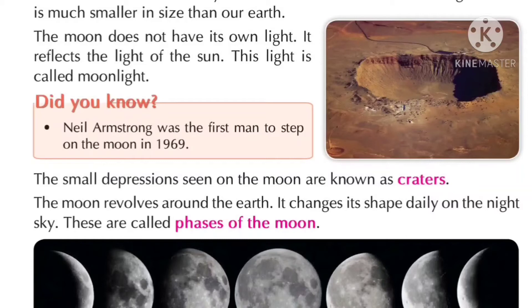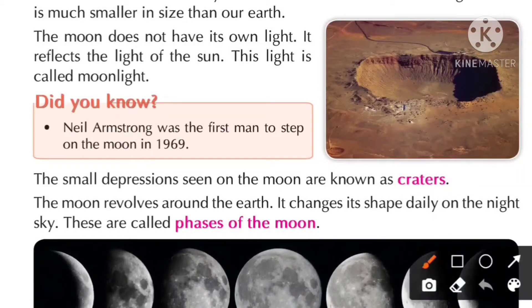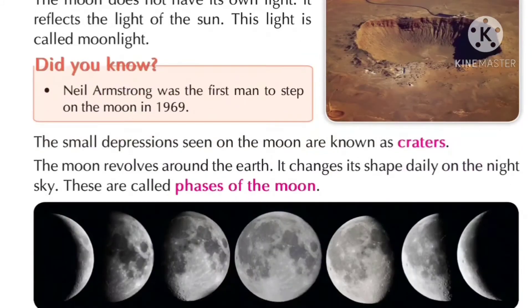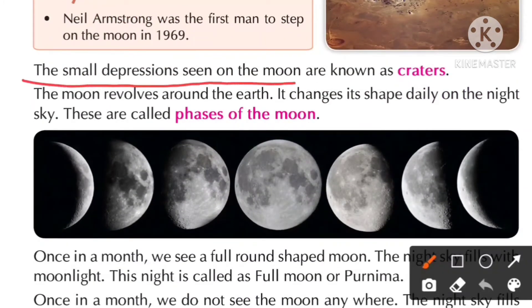Did you know Neil Armstrong was the first man to step on the moon, in 1969? The small depressions seen on the moon surface are known as craters.